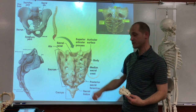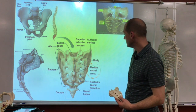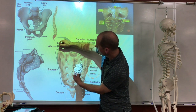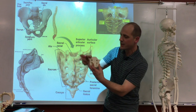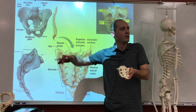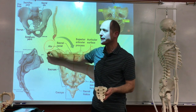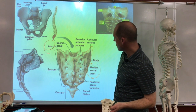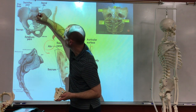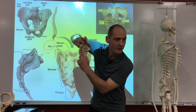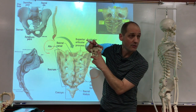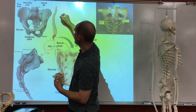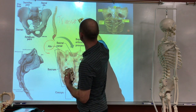On the side going up a little bit on both sides, it's called a wing — they call that the ala. Ala means wing. Sacral ala. And then from the front, you see these lines right here — these are the remnants of the intervertebral disc, which is between all the vertebrae, but they're no longer there because they're fused. They call those the transverse lines.